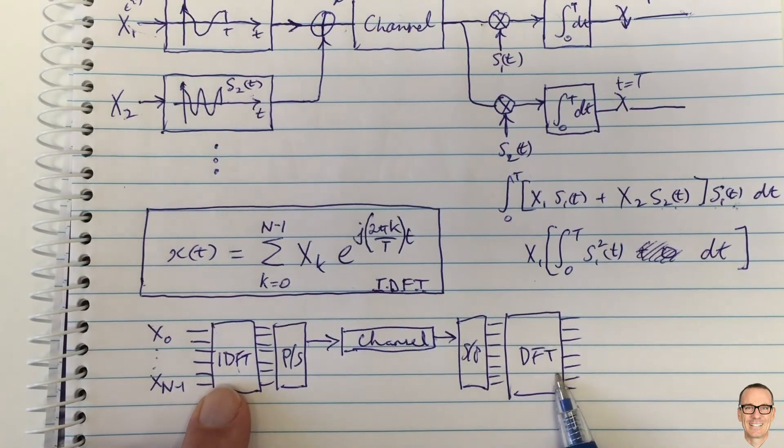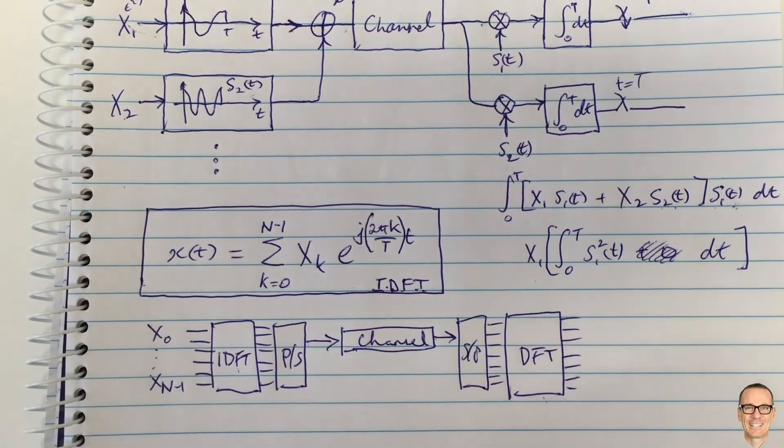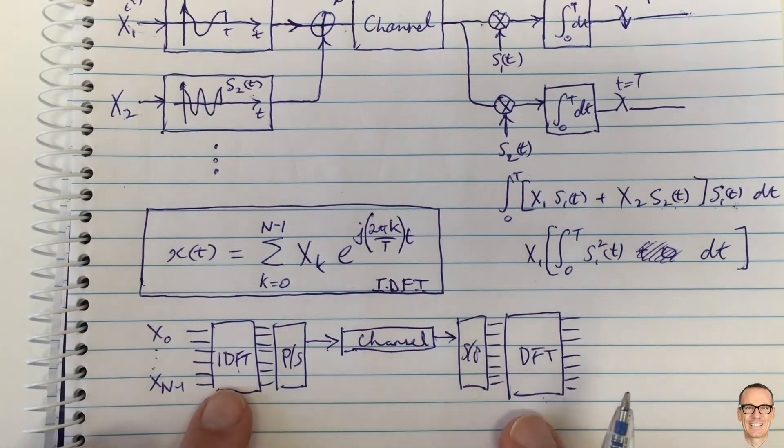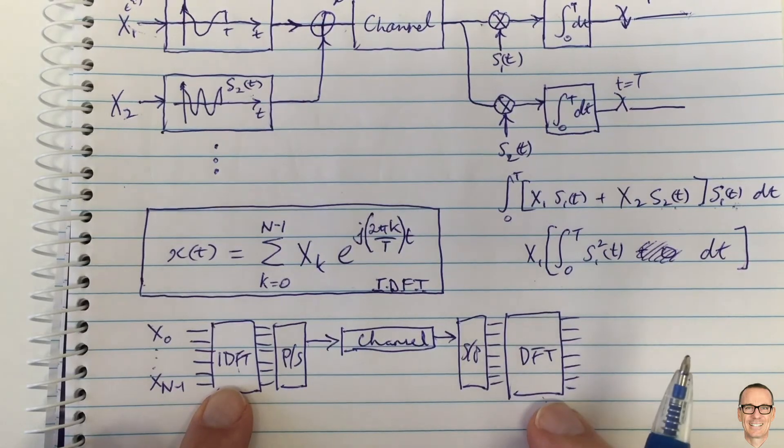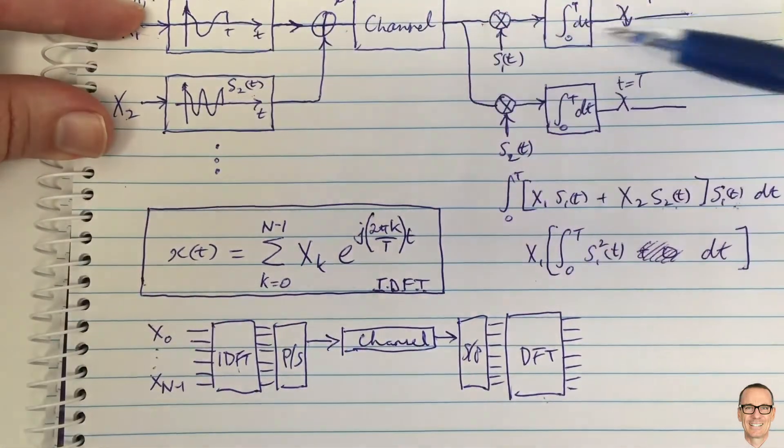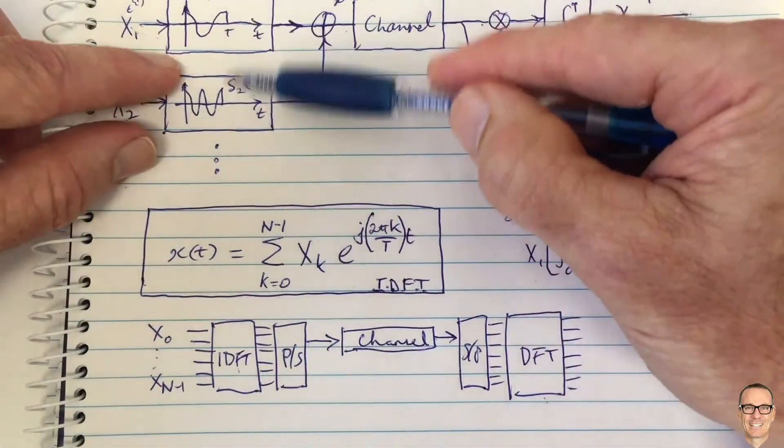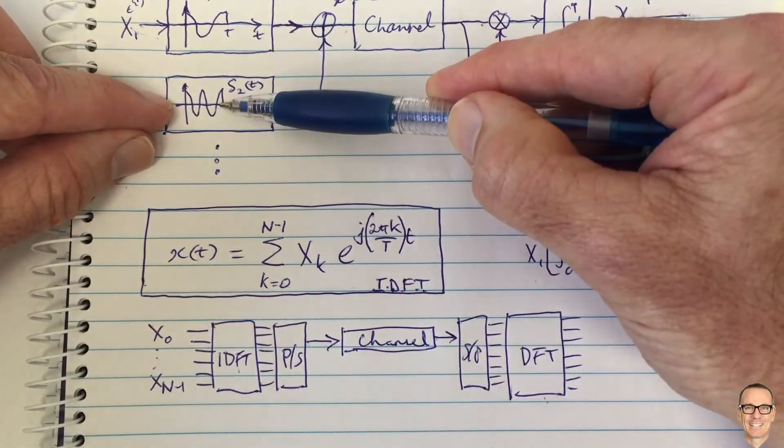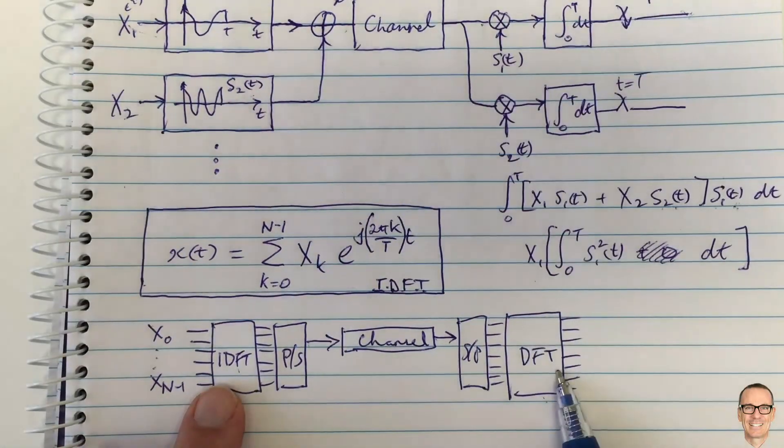And these computations can be done extremely fast on modern ASIC chips which are OFDM chips. So this is the power of the OFDM: not only are you able to get all of these channels closely packed together because of the clever way of choosing orthogonal waveforms.